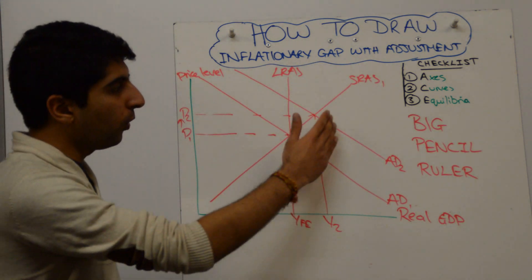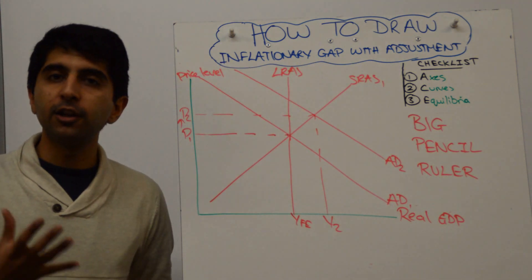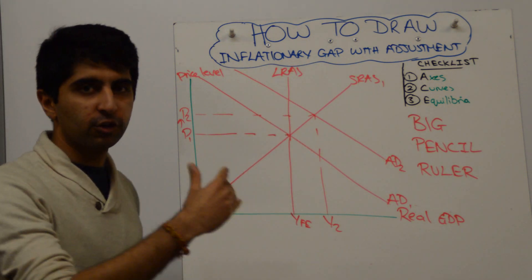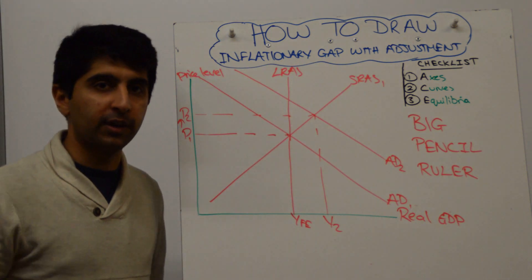If you want to, you can start with AD to the right of full employment, you can do it that way as well. But this way is just going the extra mile and showing how that inflationary gap has been caused.